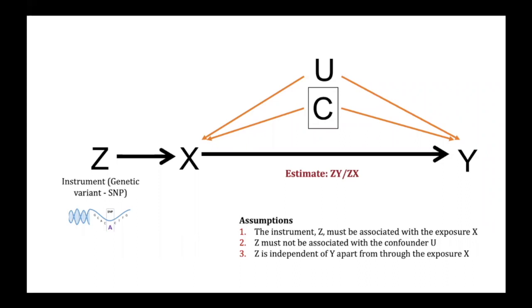Now that we know the concept of MR, I want to talk through another way to visualize it, and this is using the diagram for an instrumental variable framework with the instrument specifically being a genetic variant. And here you can more clearly see the assumptions of the method.